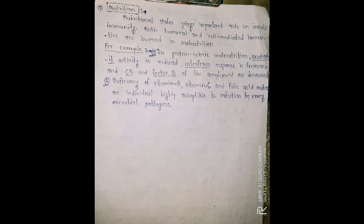Another example of malnutrition's effect on immunity: deficiency of vitamin A, vitamin C, and folic acid makes an individual highly susceptible to infection by many microbial pathogens. A person deficient in these vitamins will be much more susceptible to microbial infections. So nutrition plays an important role in innate immunity.